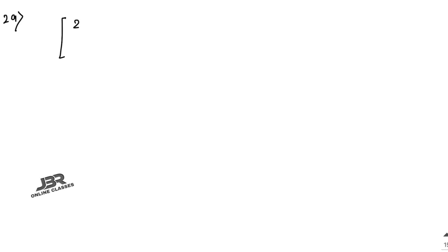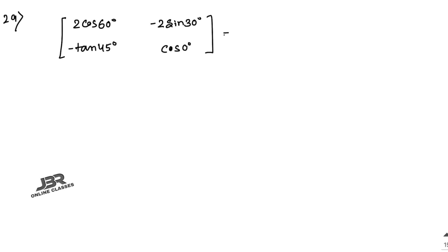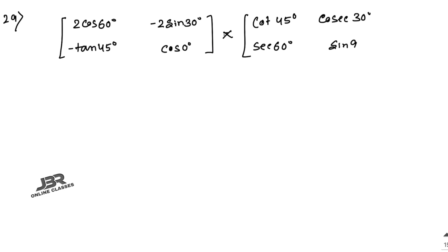Now sum number 29: evaluate the matrix product using trigonometric values. The first matrix is [2cos60°, -2sin30°; -tan45°, cos0°] and the second is [cot45°, sec60°; cosec30°, sin90°]. Substituting: cos60° equals 1/2, so 2cos60° equals 1. sin30° equals 1/2, so minus 2sin30° equals minus 1. tan45° equals 1, so minus tan45° equals minus 1. cos0° equals 1.